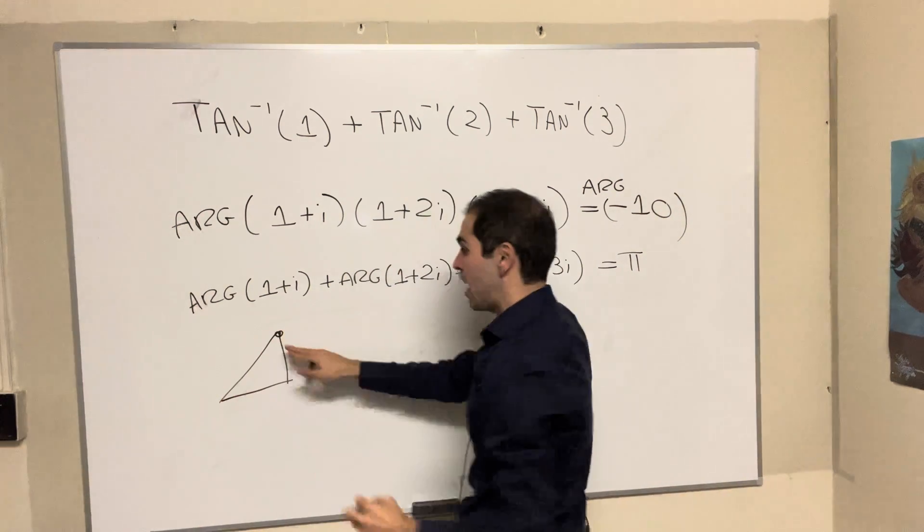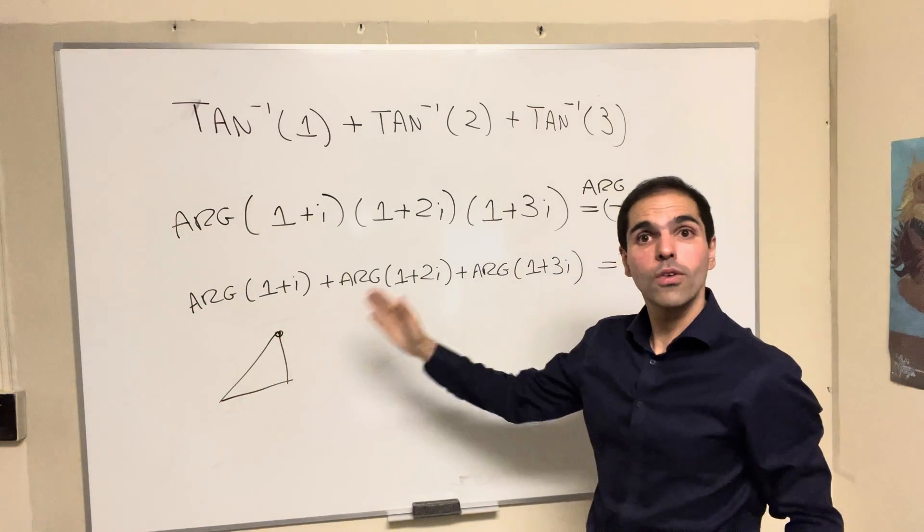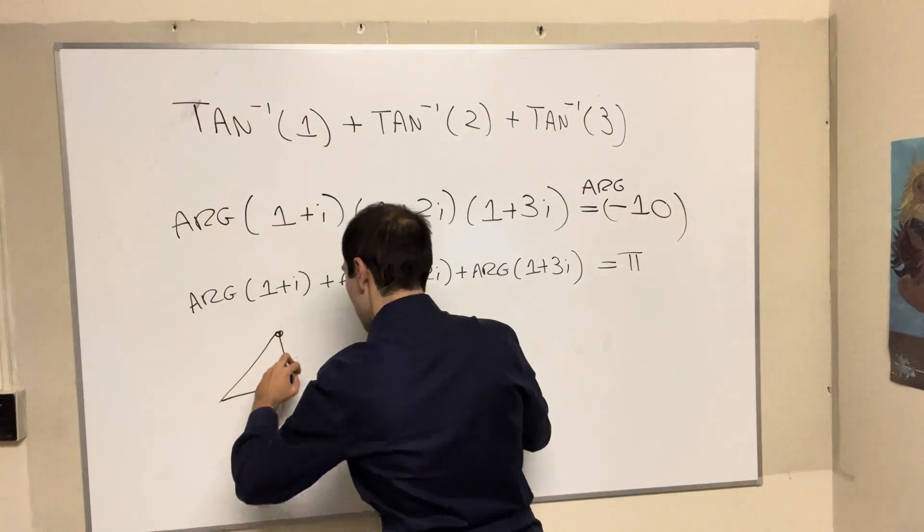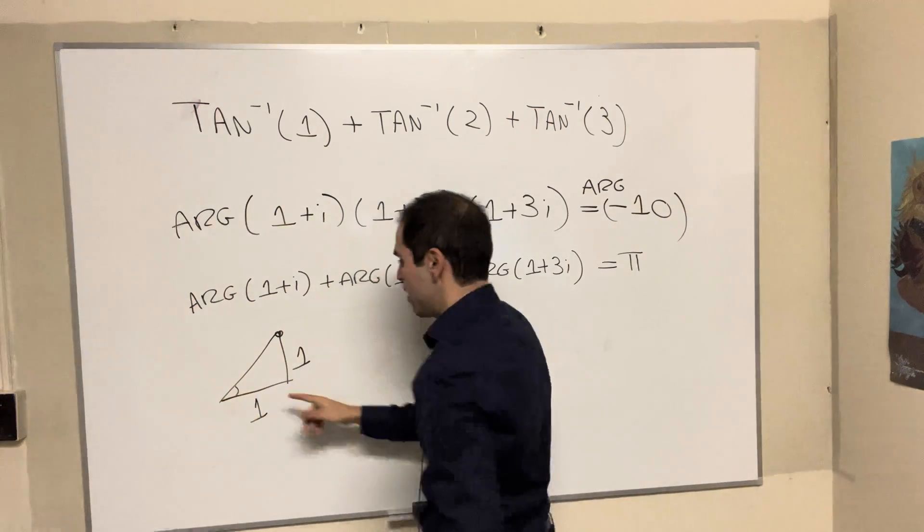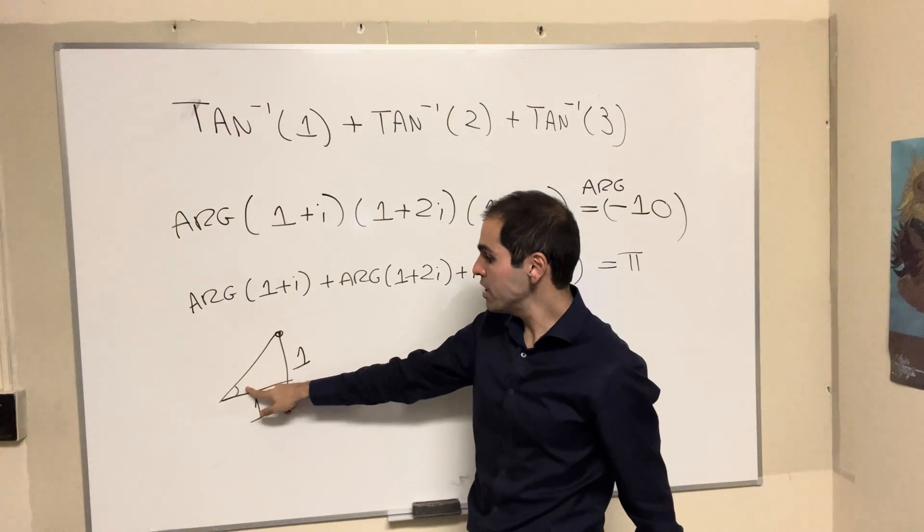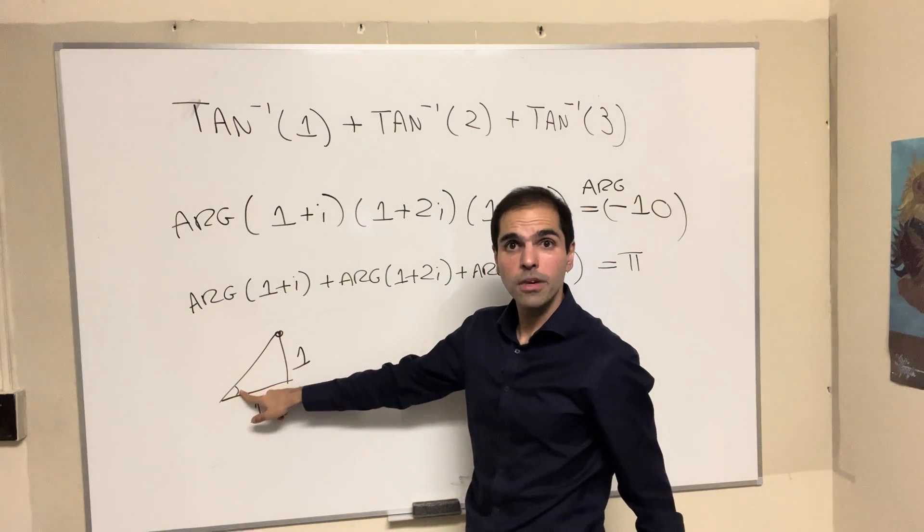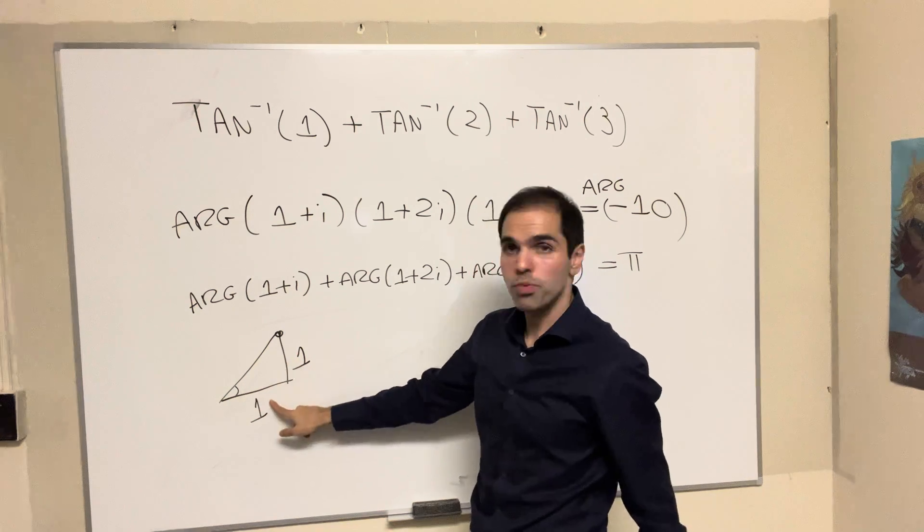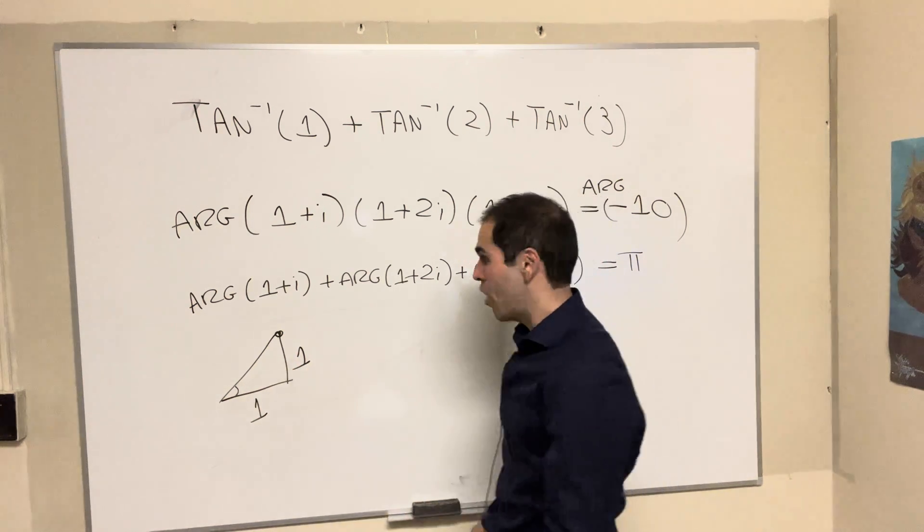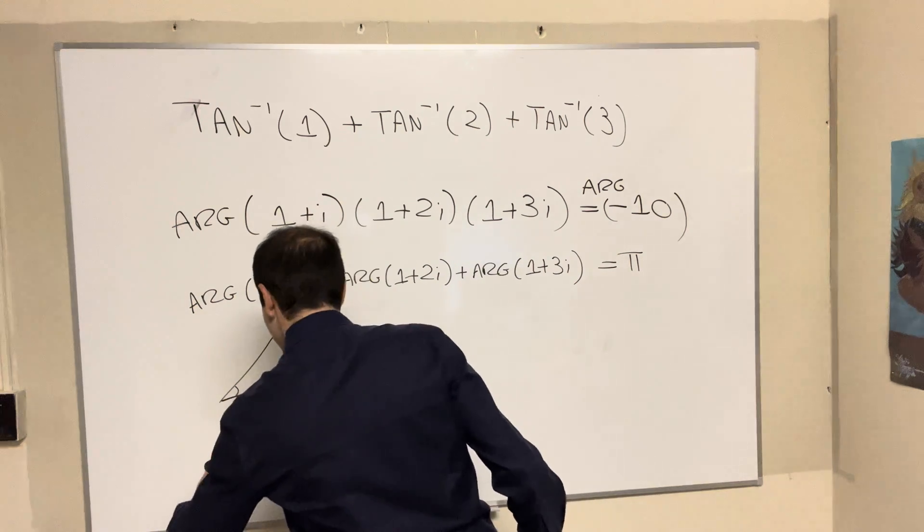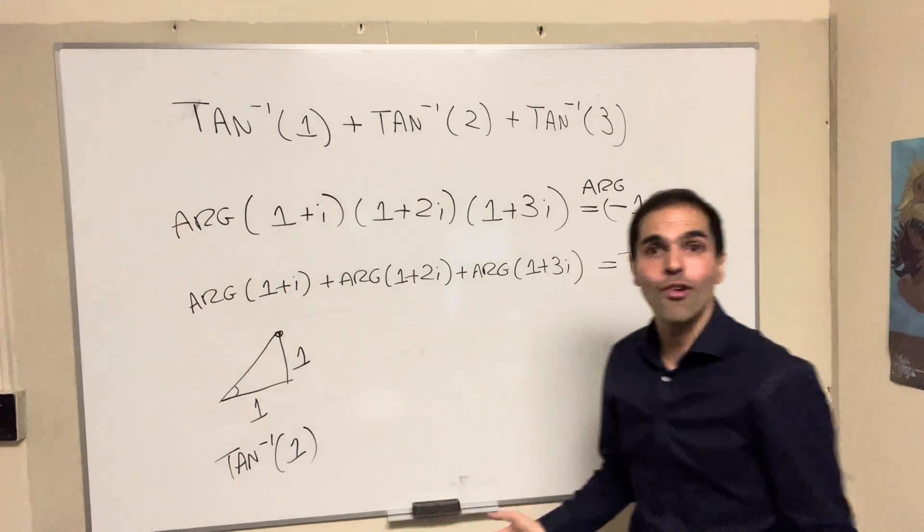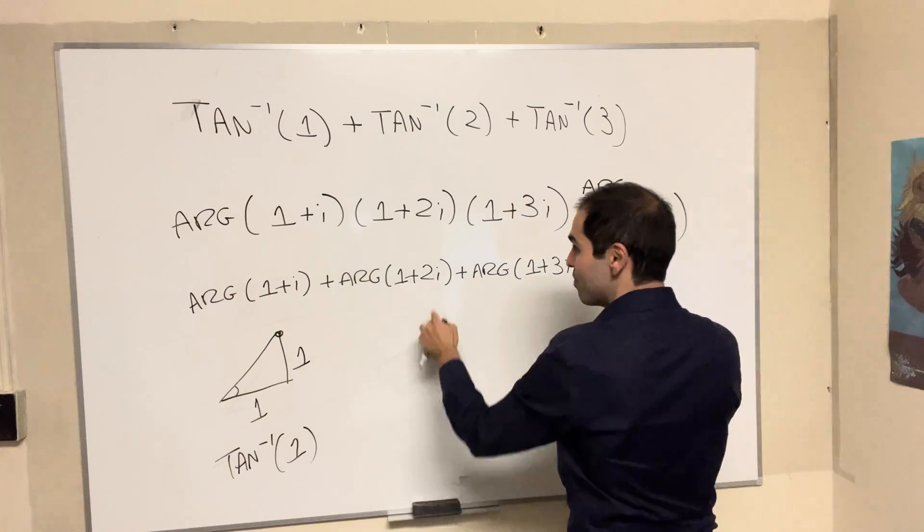So 1+i, think of going 1 to the right and 1 up. And the angle this number makes with the positive real axis is this one. But if you think about this, this is precisely arctangent of 1 over 1, which is arctangent of 1. Yeah, it is π/4, but we don't even need that.